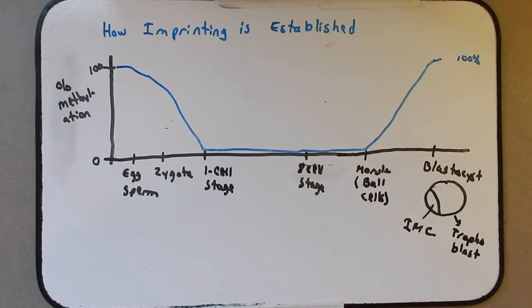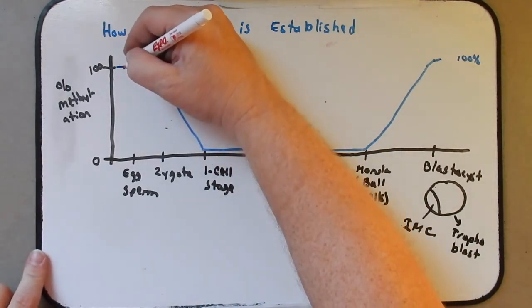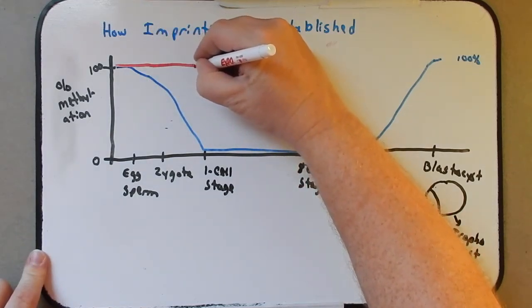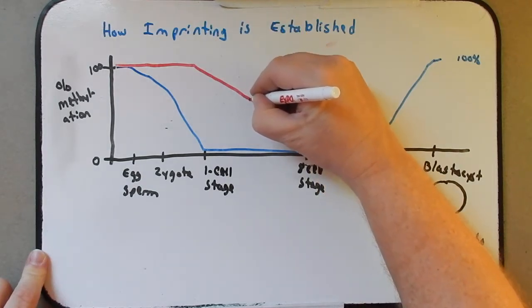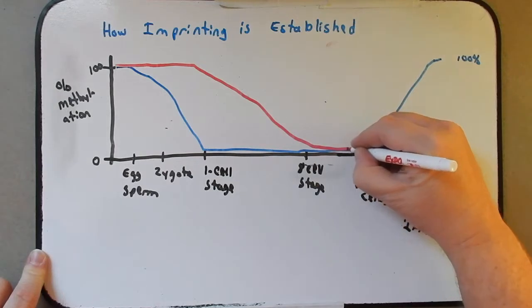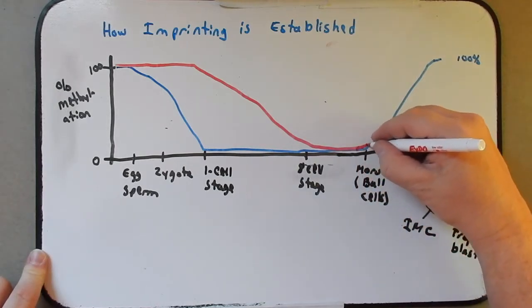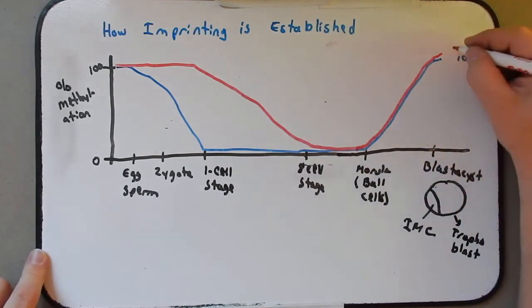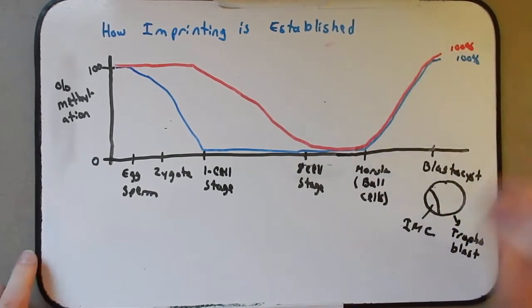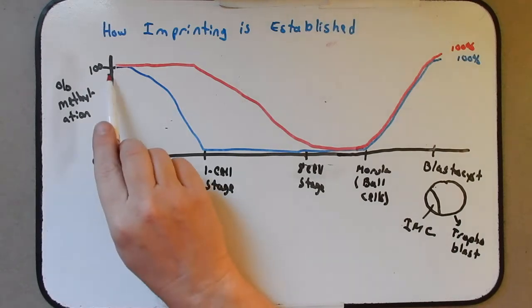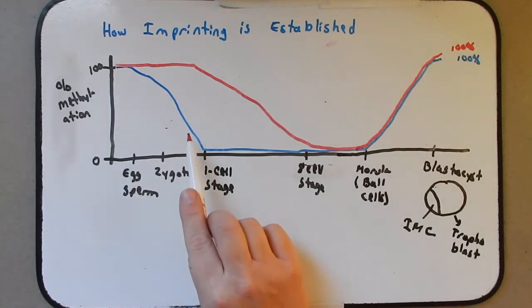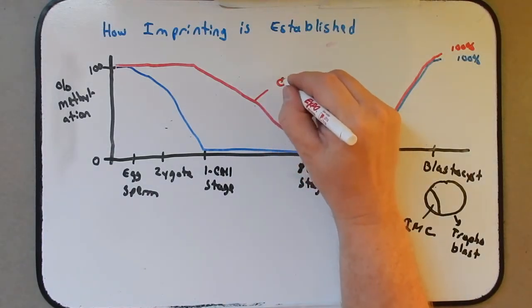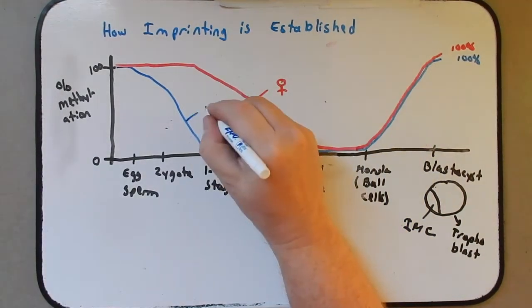Egg demethylation and remethylation occurs at a slightly different pace. It will remain 100% methylated until the one cell stage. At the one cell stage, it will slowly become demethylated until about the eighth cell stage, when it's about zero percent methylated. At the morula stage, it will become remethylated at a pace similar to that of the sperm. And then by the time you get to the blastocyst stage, it is 100% methylated. So it goes through this process of demethylating the DNA, both sperm and eggs.